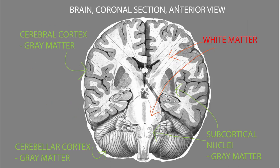The brain has more gray matter on the outside and more white matter on the inside, which is kind of the opposite of the spinal cord. The gray matter on the outside of the brain is called cortex. Looking at a coronal section of the brain from the front, we have gray matter all around the outside of the cerebrum — called cerebral cortex. The cerebellum below is also covered in gray matter called cerebellar cortex. The brainstem is not covered in gray matter. The lighter-colored material inside the brain is white matter.